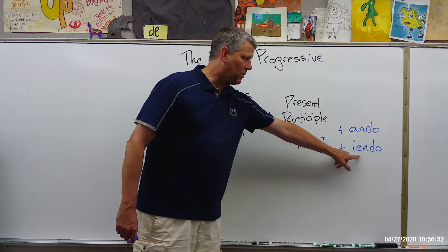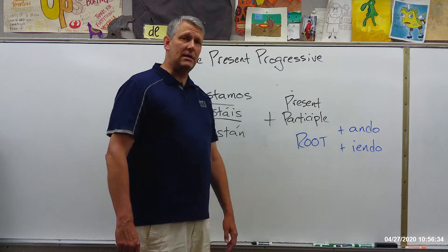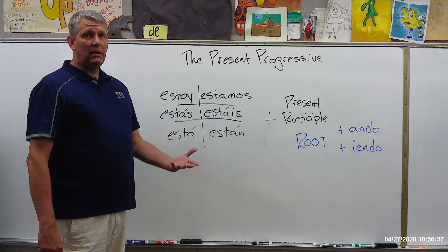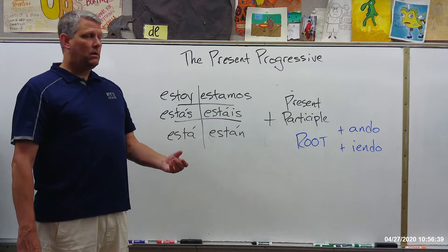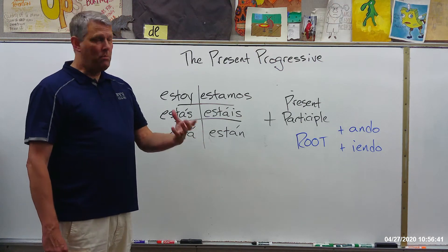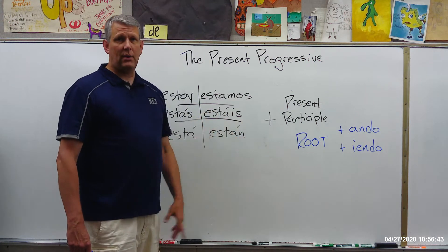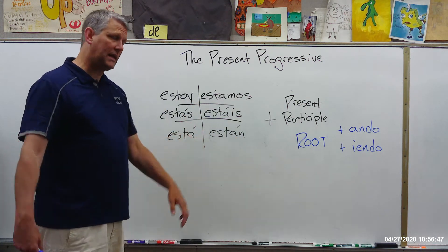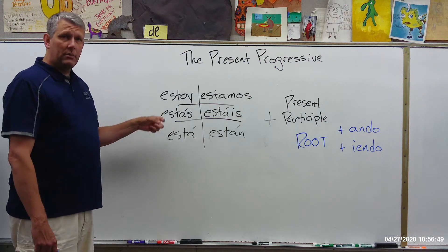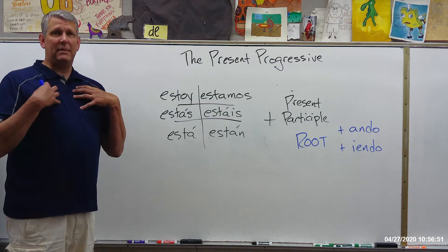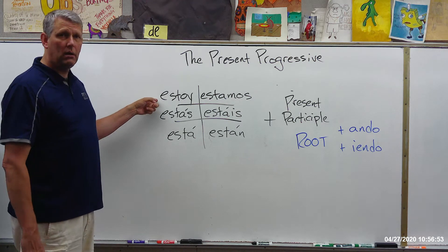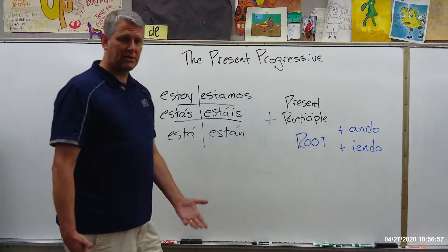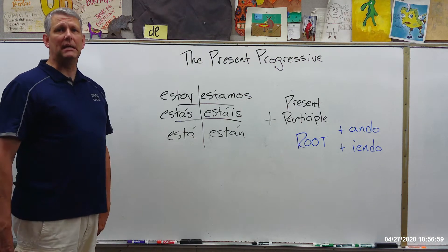For an ER or IR verb, we add the letters I-E-N-D-O. For example, if I wanted to say 'I am eating', the verb to eat is 'comer'. I drop the ER, I'm left with 'com' — that's the root — and then I add I-E-N-D-O: 'comiendo'. So putting it all together: 'estoy comiendo' means 'I am eating'.